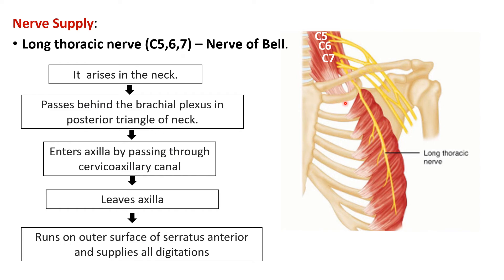The long thoracic nerve arises within the neck from the ventral rami of C5, C6, and C7 spinal nerves. It passes behind the brachial plexus in the posterior triangle of the neck, then enters the axilla by passing through the cervico-axillary canal — bounded anteriorly by the clavicle, medially by the first rib, and posteriorly by the upper border of the scapula. It then leaves the axilla, runs on the outer surface of the serratus anterior, and supplies each digitation. Most muscles are supplied on their deeper surface, but here the nerve runs superficially, making it liable to injury.